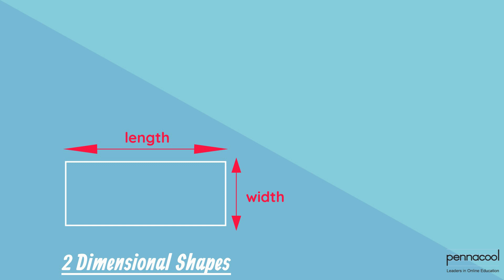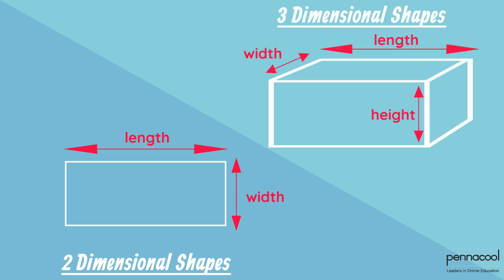Two-dimensional shapes are flat. They only have length and width. Three-dimensional shapes, however, have length, width, as well as height.